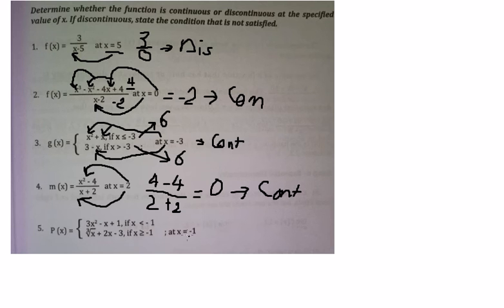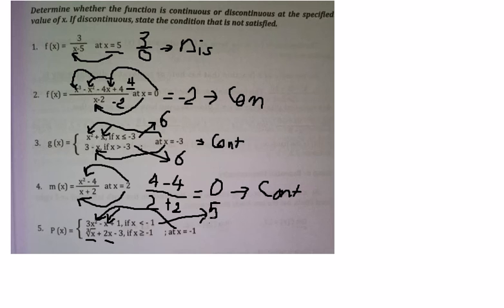The last one: if we put s equal to negative one in here, and negative one in here, this one you will get about number five, and this one you will get about negative six. That means the left and the right don't have the same value, so we can say that's discontinuous.